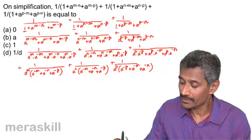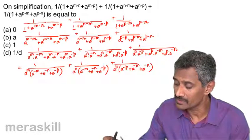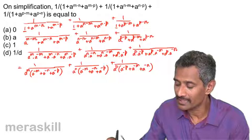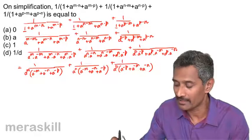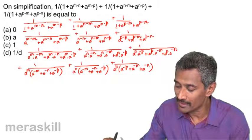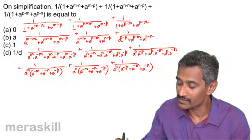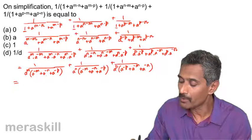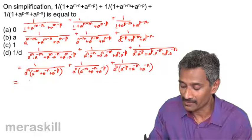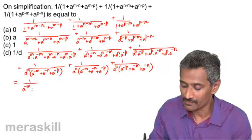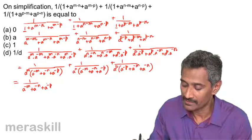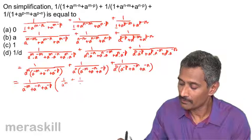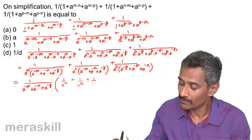So we have a raised to m, a raised to minus m, a raised to minus n — note the order may be interchanged but a plus b equals b plus a, so it doesn't change the value. Ultimately, we can take out the common factor a raised to minus m plus a raised to minus n plus a raised to minus p from all three terms in the numerator.